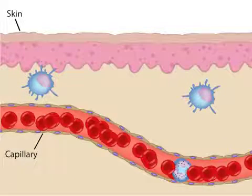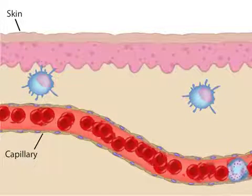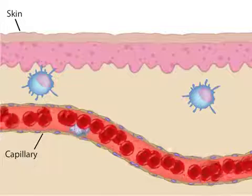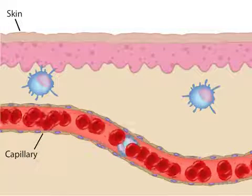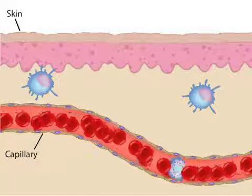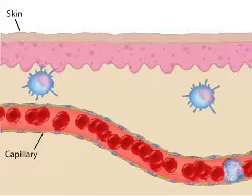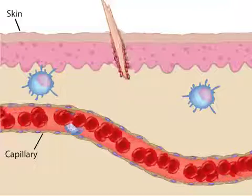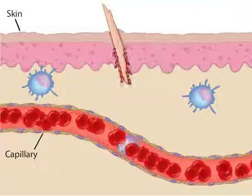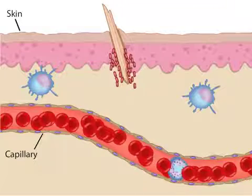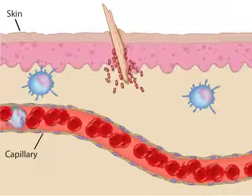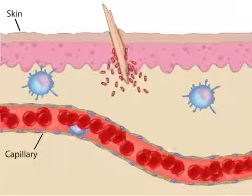Inflammation is a critical innate defense in the war between microbial invaders and their hosts. Microorganisms trigger inflammation when they are introduced into the body and begin to grow and produce compounds that damage host cells.